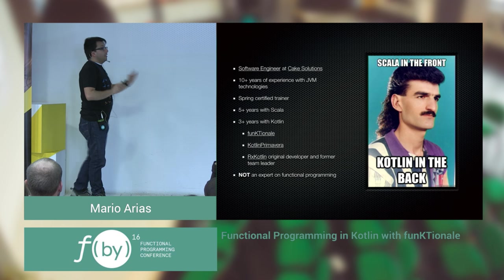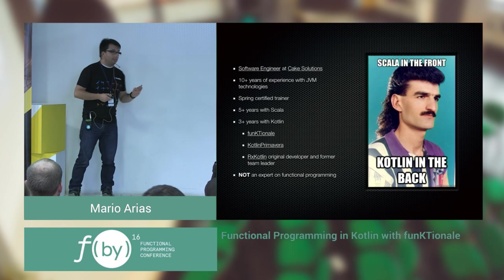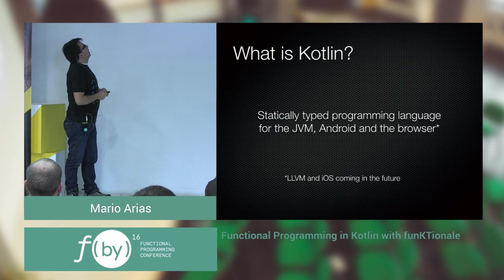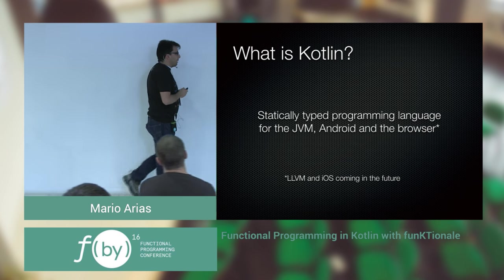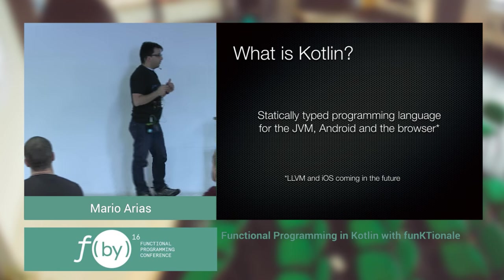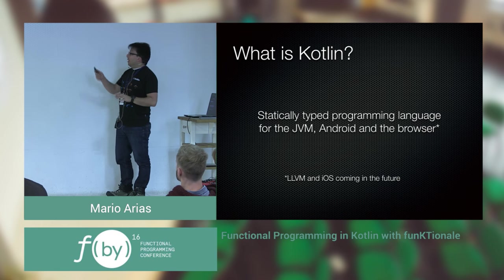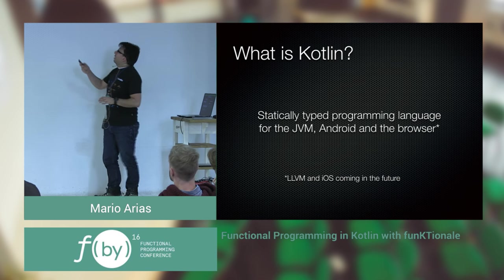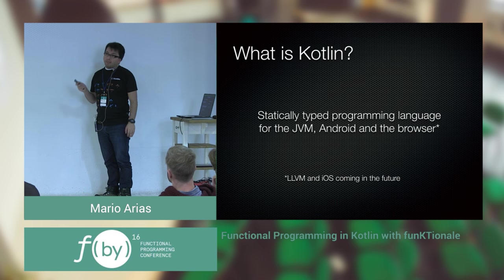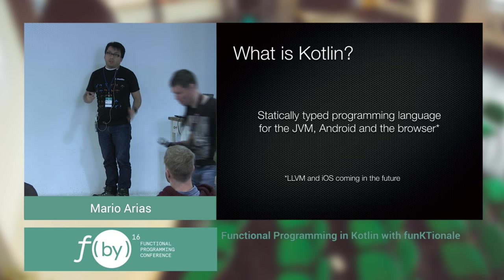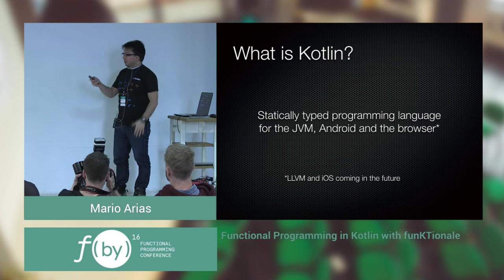I do not consider myself an expert on Functional Programming. So, what is Kotlin? Kotlin is a statically typed programming language for the Java Virtual Machine, Android, and it also compiles to JavaScript. But be careful, because they are working on LLVM and iOS integration. So at some point in the future, in a few years, you could develop actual iPhone applications with it.